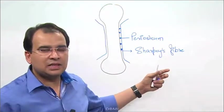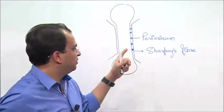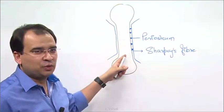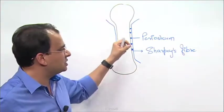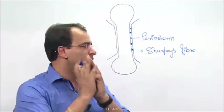Sharpey's fibers are nothing, they are the projection of collagen fibers from the surface of the bones. These spike-like projections are attaching the periosteum to the bone.